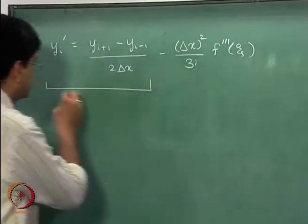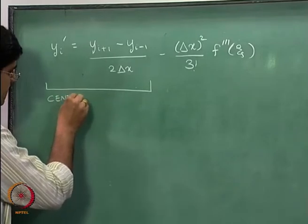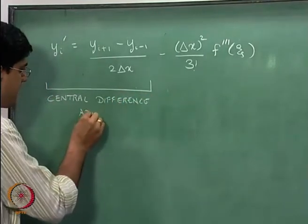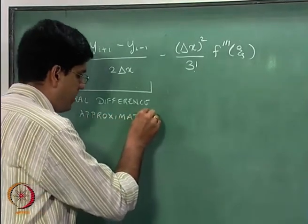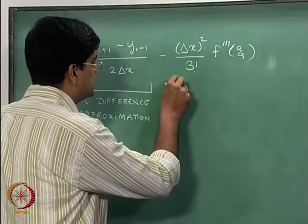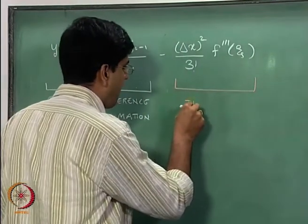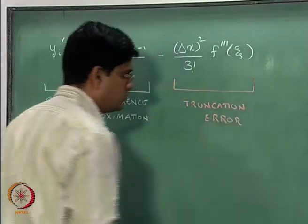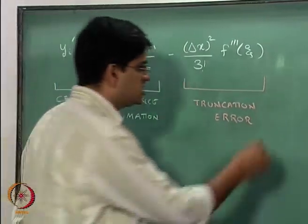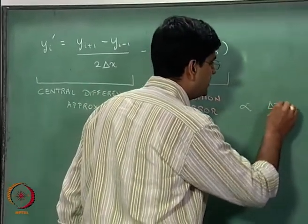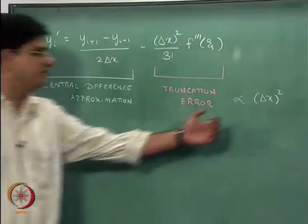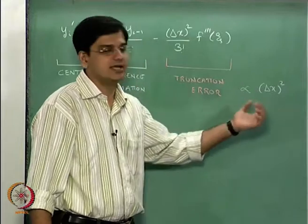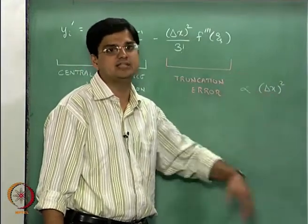This part is the central difference approximation. In the central difference approximation, the truncation error is proportional to delta x squared. So that means if you make delta x one tenth, the truncation error is going to reduce by 100. If you double delta x, you are going to make the truncation error in dy/dx four times greater.